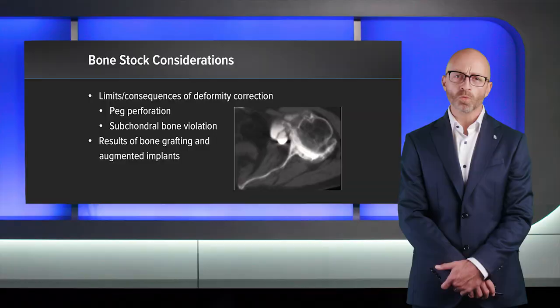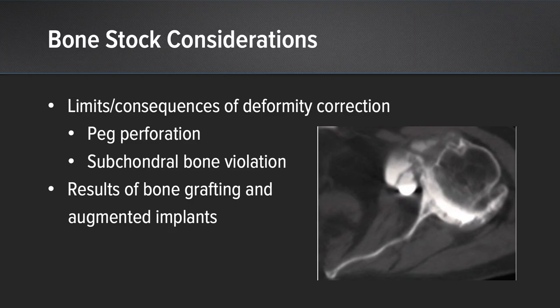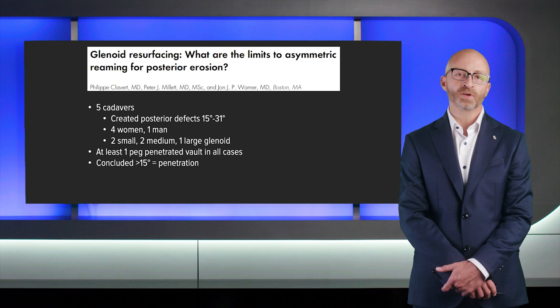What about bone stock? We want to think about the limits of deformity correction, both from a peg perforation standpoint and from a standpoint of violation of the subchondral bone. Several studies have concluded that approximately 15 degrees is the amount you can correct without penetration of the glenoid vault.